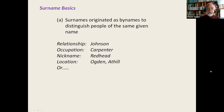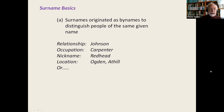A few basics about surnames to start off: surnames originated as by-names to distinguish people of the same given name. So if you have a village with two Johns in it, you'd get into the habit of saying John Johnson, or John the carpenter, or John the redhead, or if he lived near the hill, John that Hill, or if he came from a place called Ogden, you might call him John from Ogden. Then at some stage this became hereditary when people started needing hereditary names.